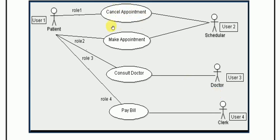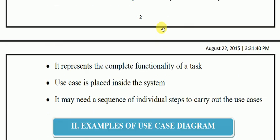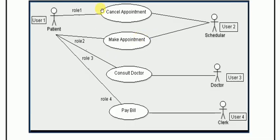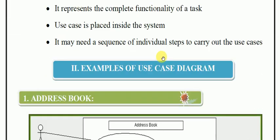A use case is a task. It represents the complete functionality of the system. The task use case can be placed inside the system boundary. It may need a sequence of individual steps to carry out — so it represents complete functionality and the behavior of a particular function. It is a behavioral, dynamic representation, and use cases are placed inside the system.